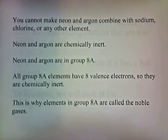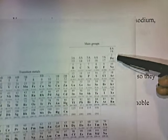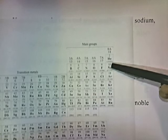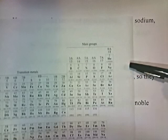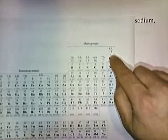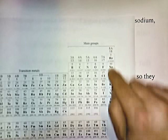This is why the elements in group 8A are called the noble gases. All elements in group 8A have an octet with the exception of helium, but neon, argon, krypton, xenon, and radon all have eight outer electrons. That means they're not going to want to gain or lose electrons, and that property makes them not want to react with other elements.